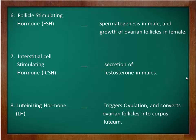The seventh hormone is interstitial cell stimulating hormone, or ICSH. This hormone controls the secretion of testosterone in males; its target organ is the testes. The eighth and last hormone produced by the anterior pituitary gland is luteinizing hormone. Luteinizing hormone works alongside FSH to trigger the process of ovulation and stimulates the conversion of ovarian follicles into corpus luteum in females.